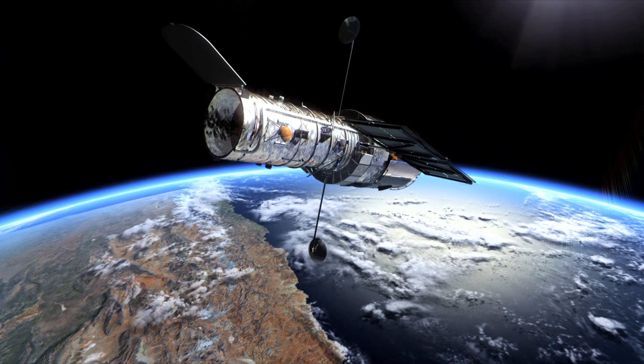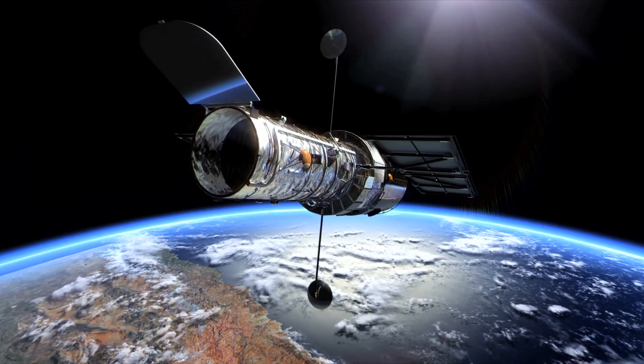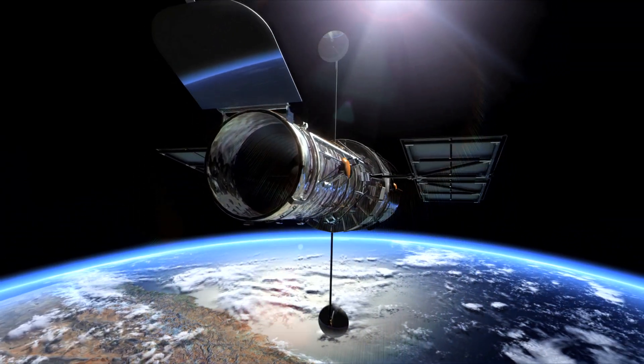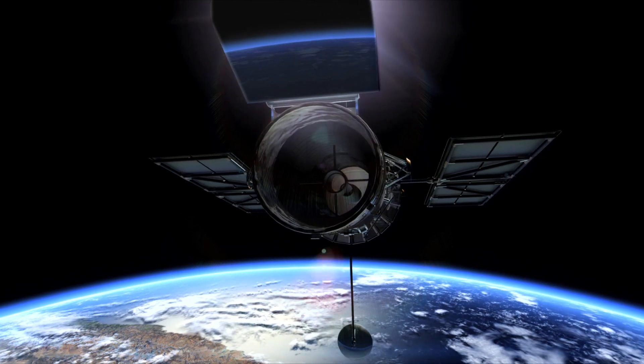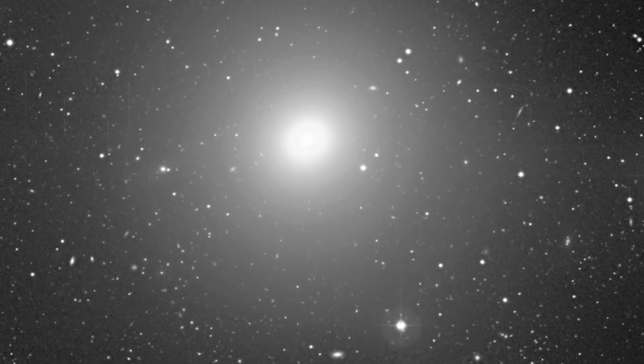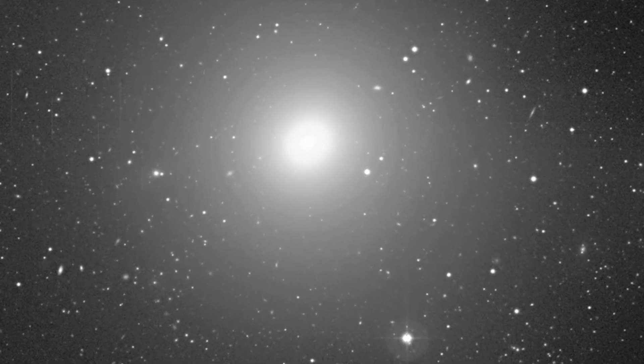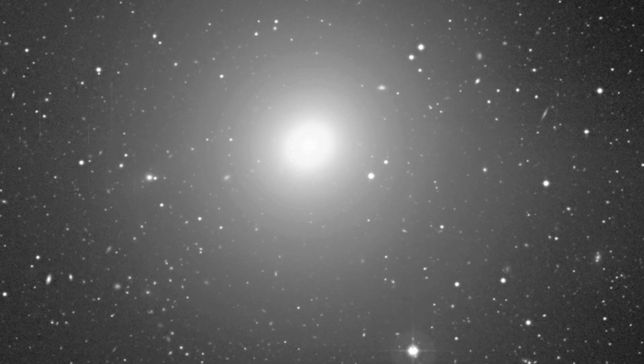Before Hubble was launched, astronomers had noticed that the centers of many galaxies were somehow much denser and brighter than they were expected to be. And so they speculated that there must be some kind of huge, massive object lurking in the centers of these galaxies in order to provide the additional gravitational attraction.